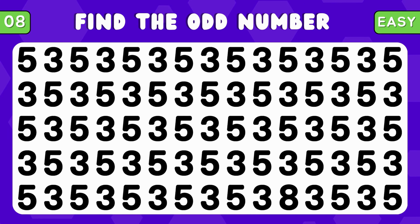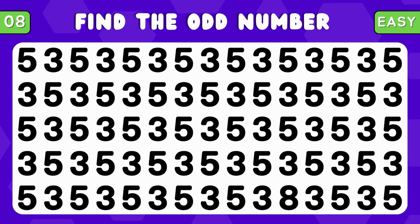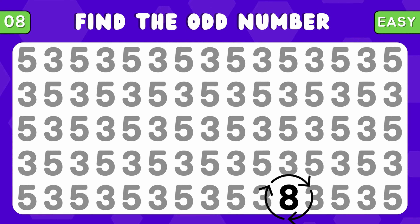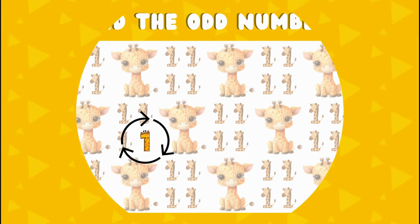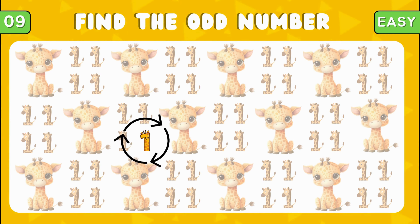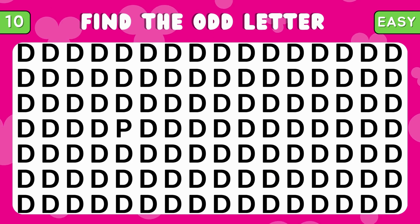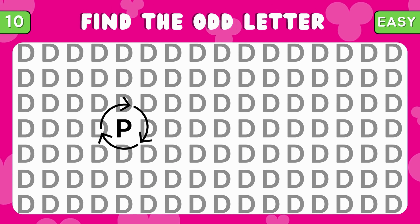You have nailed it. Identify the number different from 5 and 3. Excellent, it's the number 8. Among these giraffes, try to find the odd one. Nice job. Can you show me the odd letter? Correct. The odd letter is P.